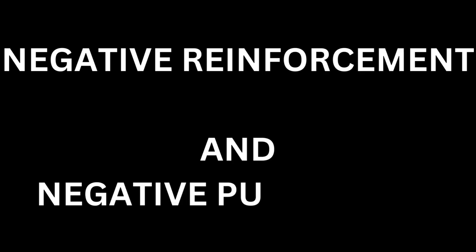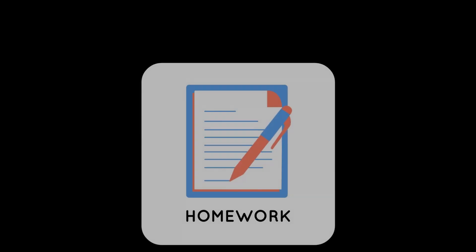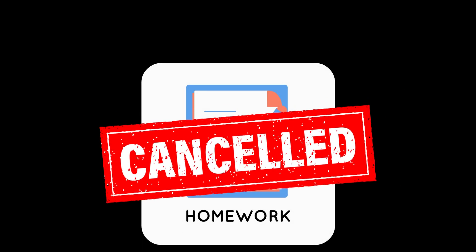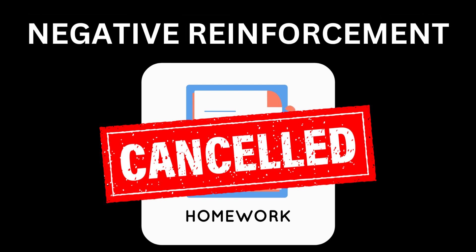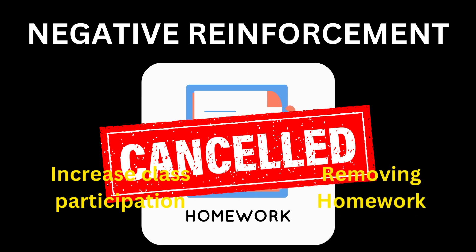Next, let's understand negative reinforcement and negative punishment through examples. If a teacher exempts a student from homework if he or she participates in class, it is an example of negative reinforcement, as the teacher is trying to increase the class participation behavior of the students by removing the homework.